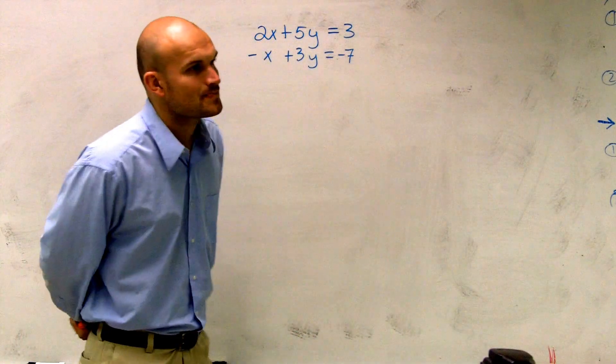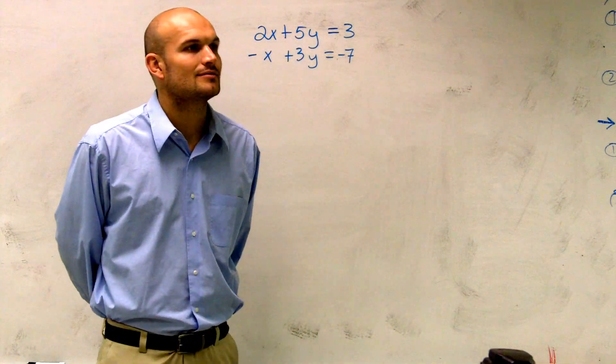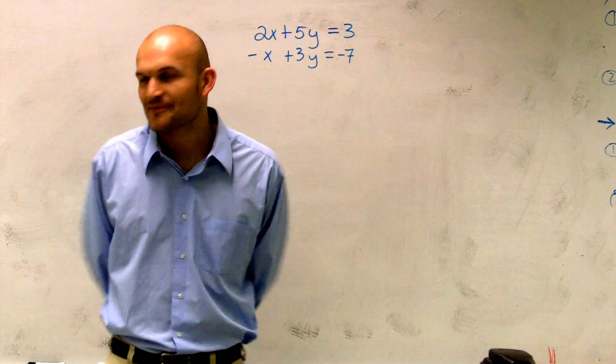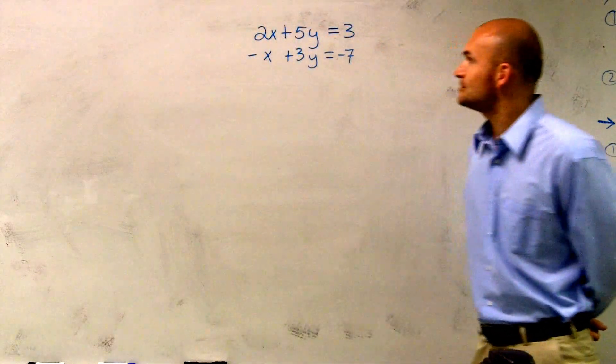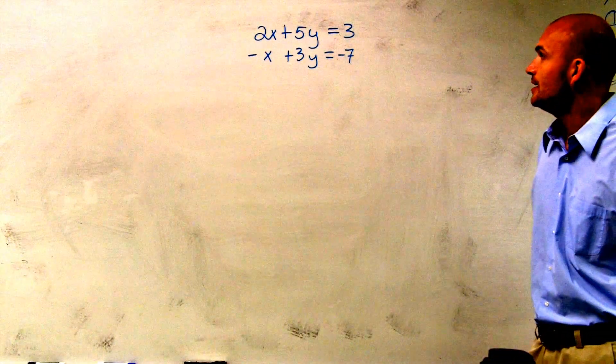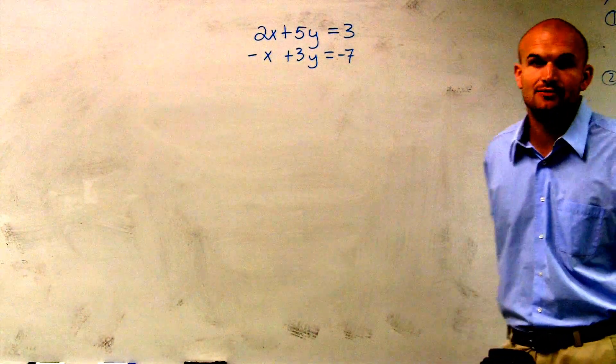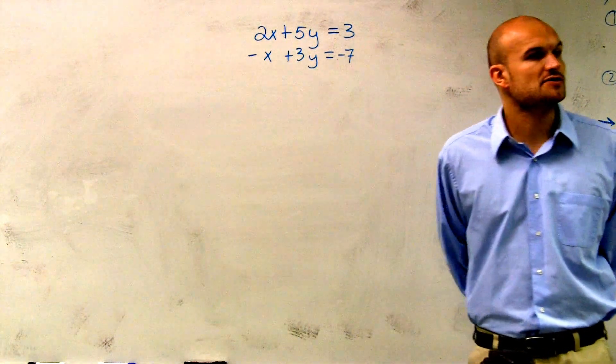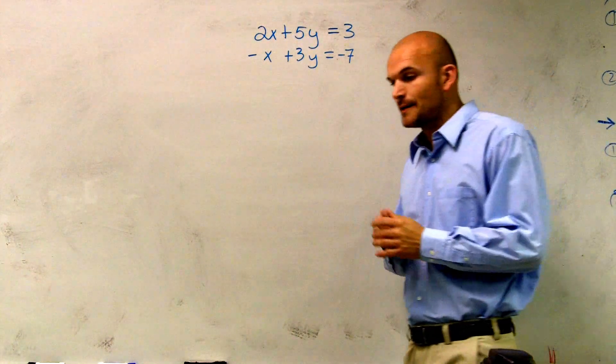Alright, so if you guys have 2x plus 5y equals 3, and we have negative x plus 3y equals negative 7, what we want to do for this problem, like I said, we're going to use elimination that we talked about.